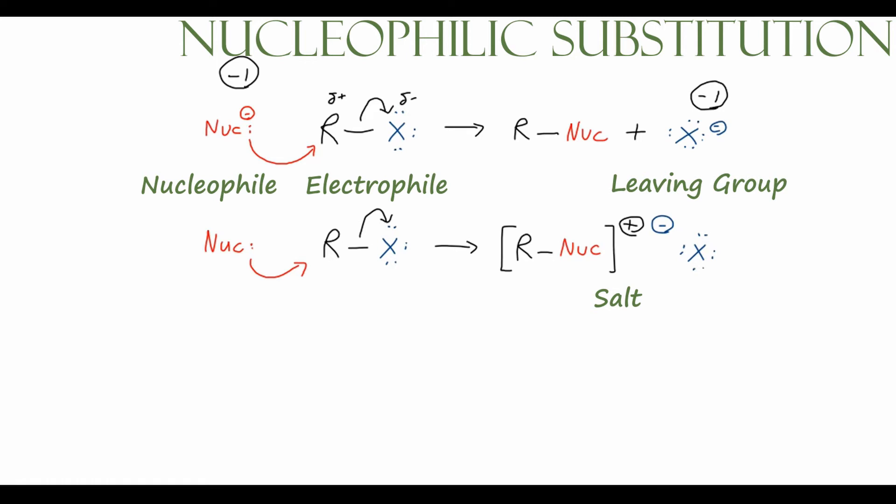Just like before, we'll have X minus, so our halogen with a negative charge, but this time it's going to form a salt with the R-Nuc product. Because whenever you have two ions in solution like this, we have a positively charged cation and a negatively charged anion, those two things will form a salt. But in the end, we end up with the same two products.